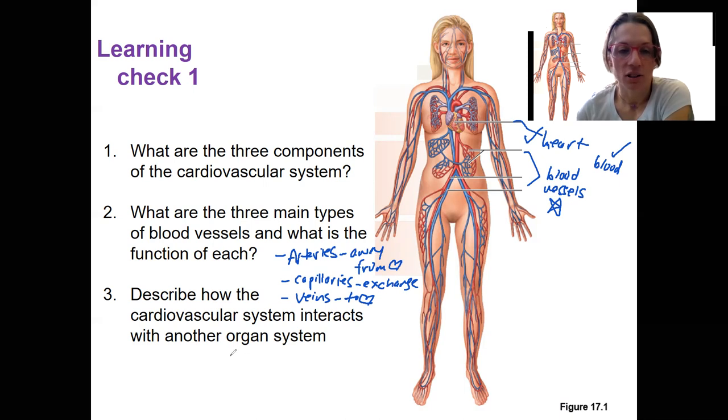Lastly, describe how the cardiovascular system interacts with another organ system. So you could choose one, pretty much any organ system you can think of. You should have been able to describe some interaction. So we've talked about endocrine this semester. Endocrine system, the definition of that is a hormone is produced and secreted in the bloodstream, transported in the bloodstream. So relies on the cardiovascular system in blood. Digestive system—in order for nutrients to be absorbed and then transported to the liver and then ultimately the rest of the body, you have to have circulation.